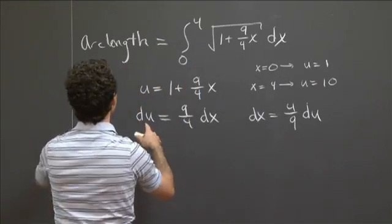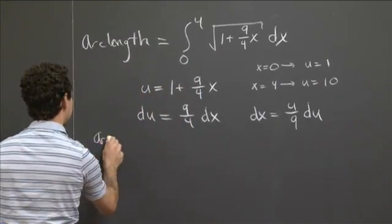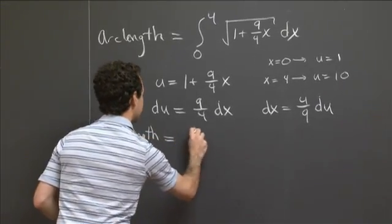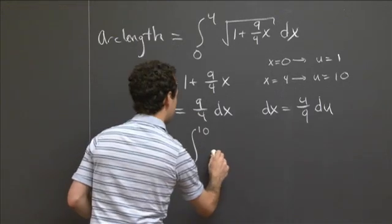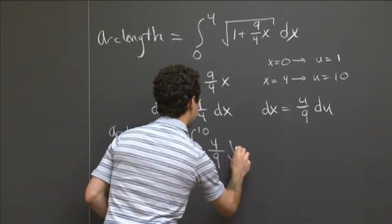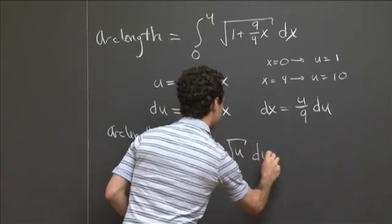And so, with those substitutions, I get that the arc length that I'm interested in is the integral from 1 to 10 of 4 ninths times the square root of u du.